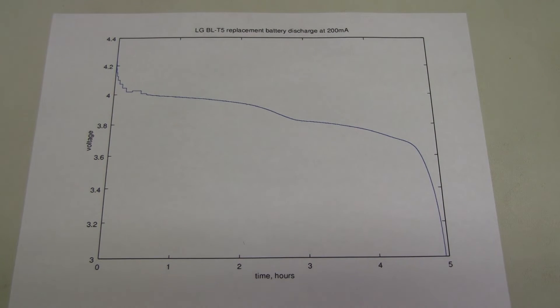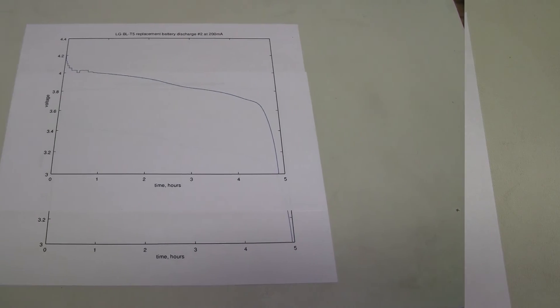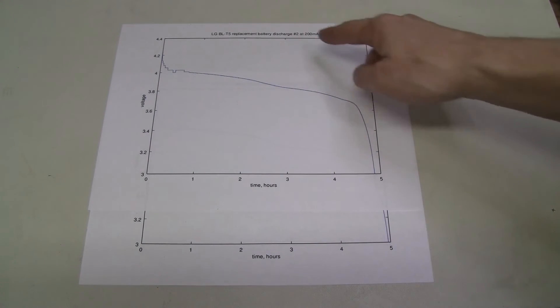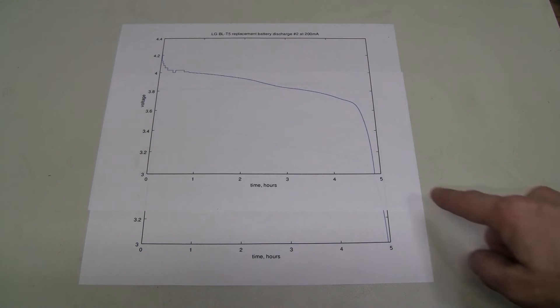I will run another cycle. This time I'm going to charge to 4.35 volts. Here is the result of the second discharge. It is almost identical, even slightly less than the first one.